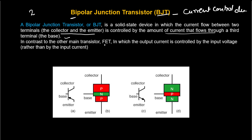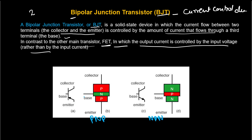We control the emitter and collector current flow through the base — this is what we call a current control device. When we talk about FET, the Field Effect Transistor, it is our voltage control device. We call this a voltage control device because the output current is controlled by input voltage. The difference between BJT and FET is that BJT controls current via base current, while FET controls output current by input voltage.